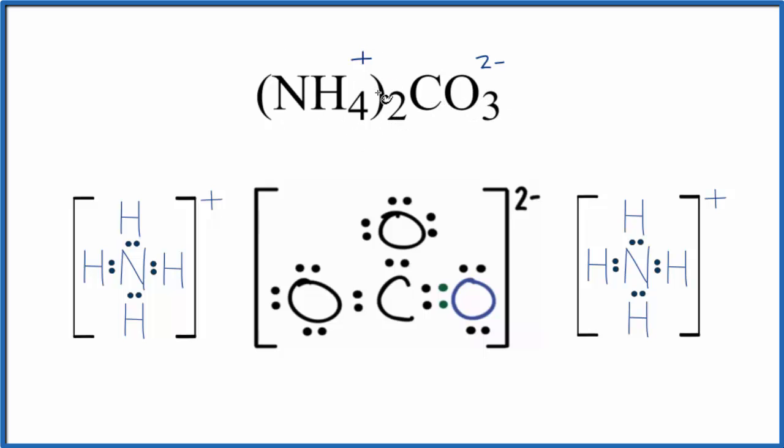Because we have ions here, this is an ionic compound. But with each ion, NH4 for instance, these are covalent bonds. Same with CO3, we have covalent bonds. So we need to draw the Lewis structure for the ammonium ion and then the carbonate ion.